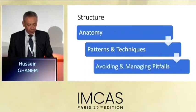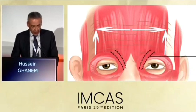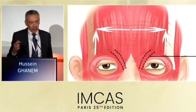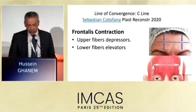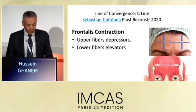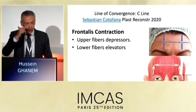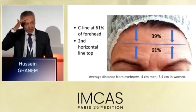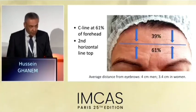I'll discuss the relevant anatomy, the patterns and techniques for injection, and how to avoid and manage pitfalls. We all know that the frontalis muscle is a single muscle occupying the full forehead from temporal fusion line to temporal fusion line on each side. If we paralyze it completely, we're going to get brow ptosis. However, Dr. Sebastian Kotofana described the C-line or the line of convergence, where there's an upper part of the frontalis muscle which is a depressor of the hairline, and a lower part which is an elevator of the eyebrows. So if we inject above the C-line, we're injecting the depressor part, so we might even get brow elevation. The lower part occupies around 60% of the forehead.